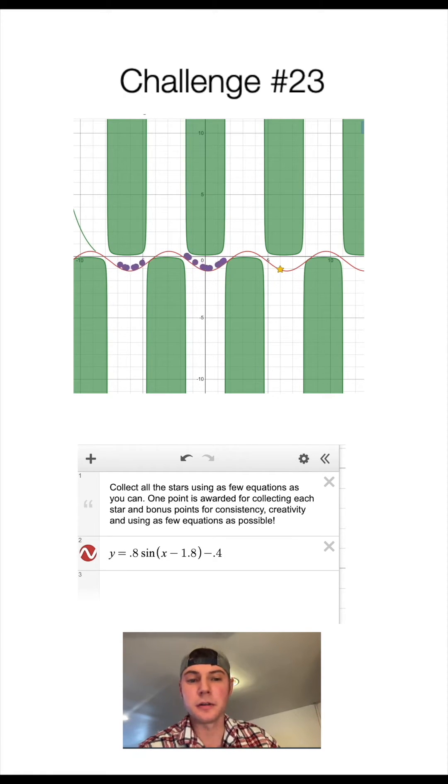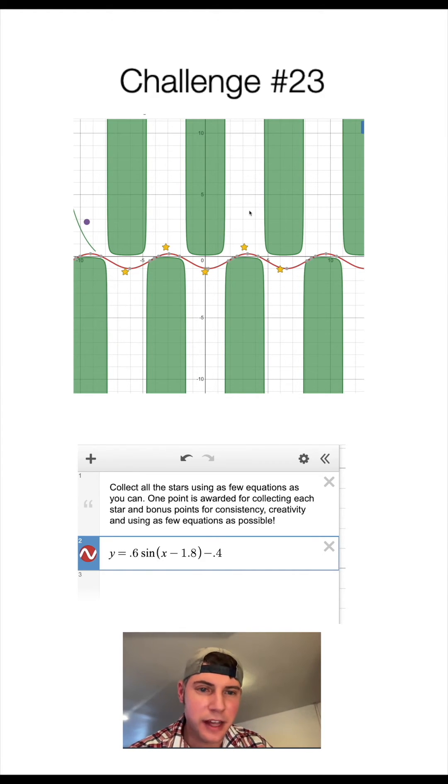Oh, so we made it two humps now. So 0.8 only went through two humps. So let's try a 0.6 now. Let's see if that does all of them. And there we go.